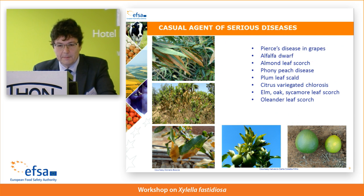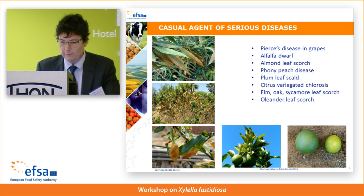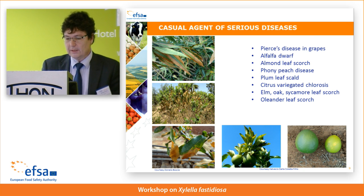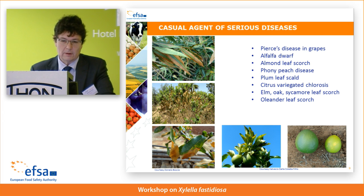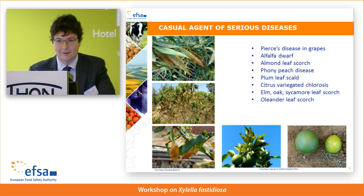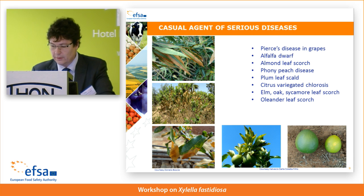Xylella is the causal agent of serious diseases including Pierce's disease of grapevine, alfalfa dwarf, almond leaf scorch, phony peach disease, plum leaf scald, citrus variegated chlorosis, and several leaf-scorching diseases. This really shows that Xylella is a polymorphic pathogen causing different kinds of diseases on different plants.